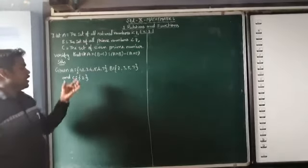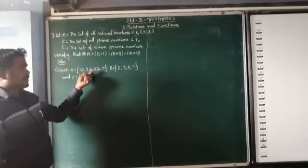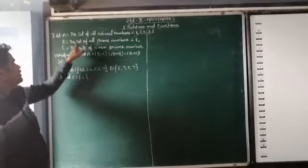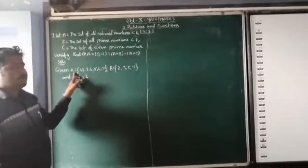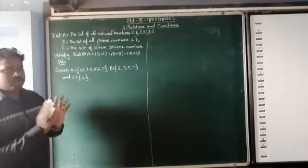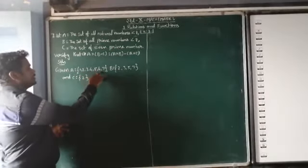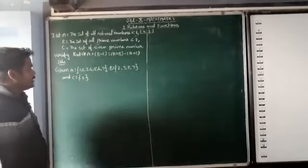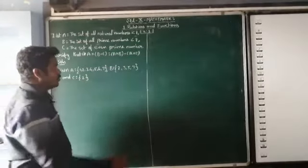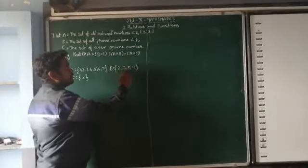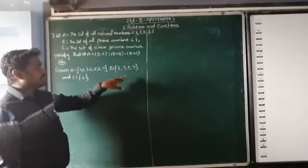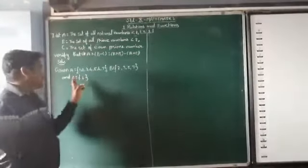I will explain the set A value, how to find it; set B value, how to find it; set C value, how to find it. The set of all natural numbers less than 8 — natural numbers start with 1, so less than 8 means up to 7. Therefore A = {1, 2, 3, 4, 5, 6, 7}. For set B, the prime numbers less than 8 are 2, 3, 5, 7. For set C, the even prime number — there is only one even prime number, which is 2 only. Therefore C = {2}.